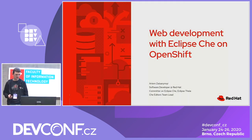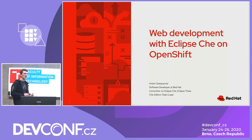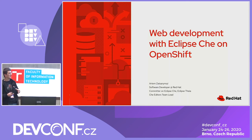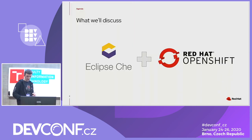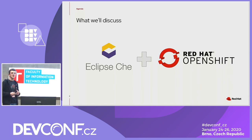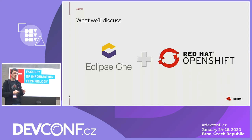Hello everyone, thanks for joining. My name is Artemis Salini and I'm working for Red Hat on the Eclipse Che project. We are going to talk about the integration between Eclipse Che and OpenShift, how it allows you to easily get started with cloud-based web development in order to get your application deployed to an OpenShift cluster.